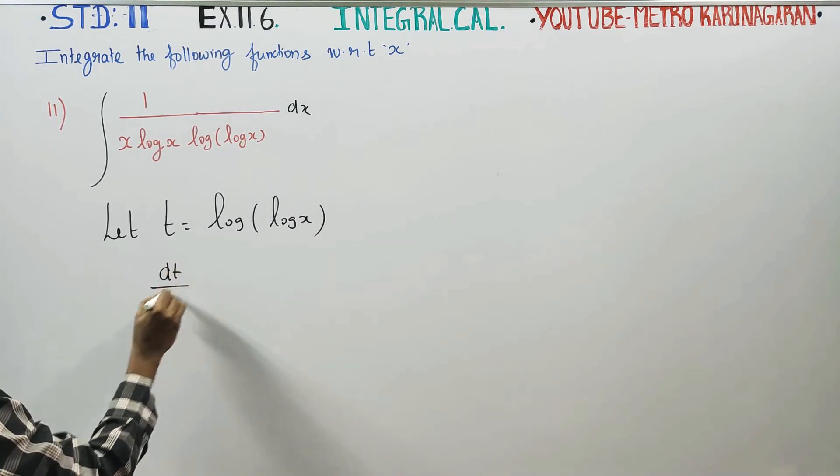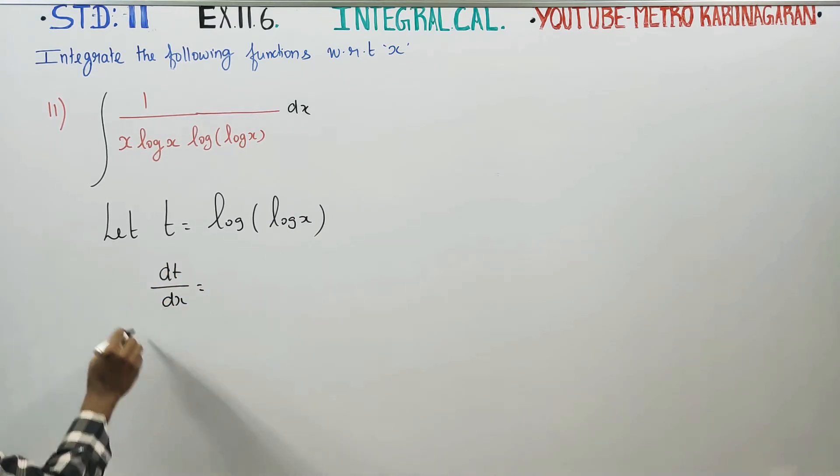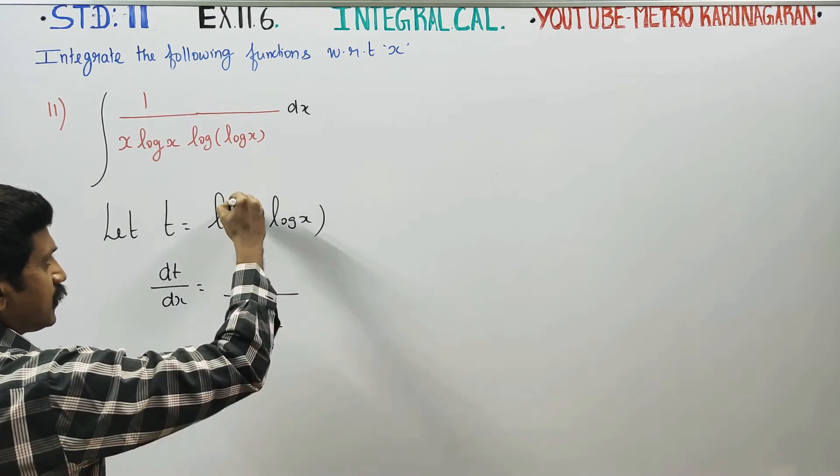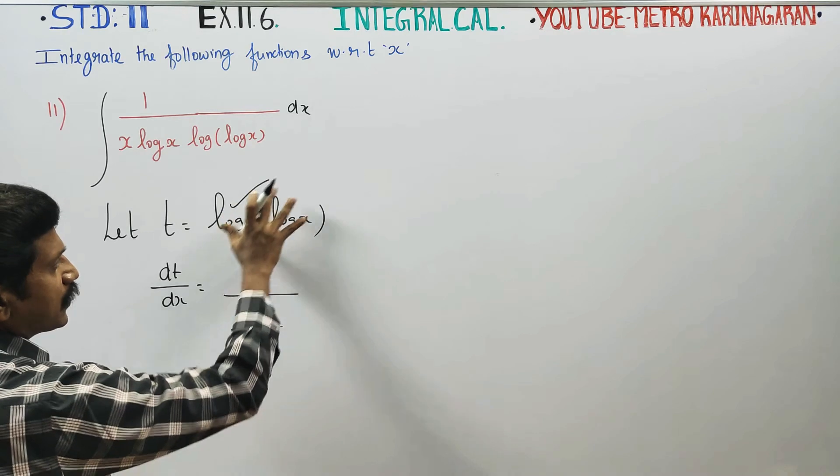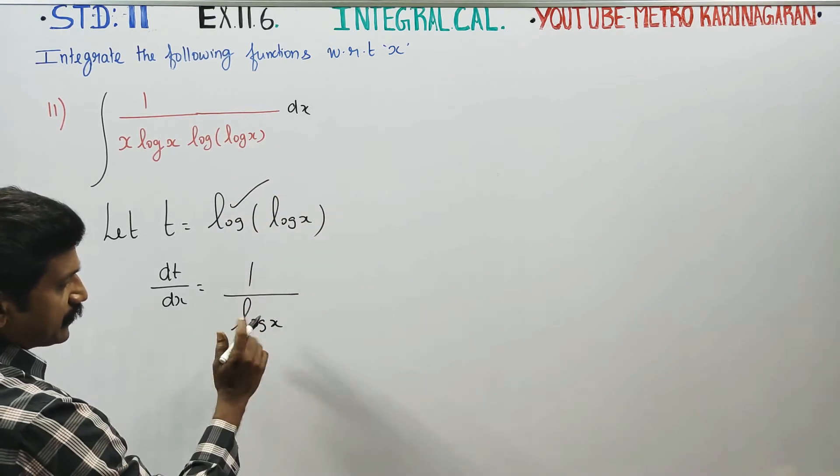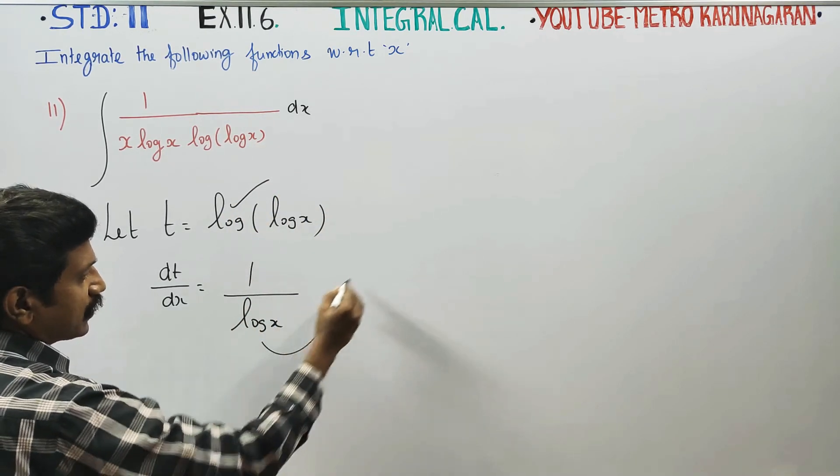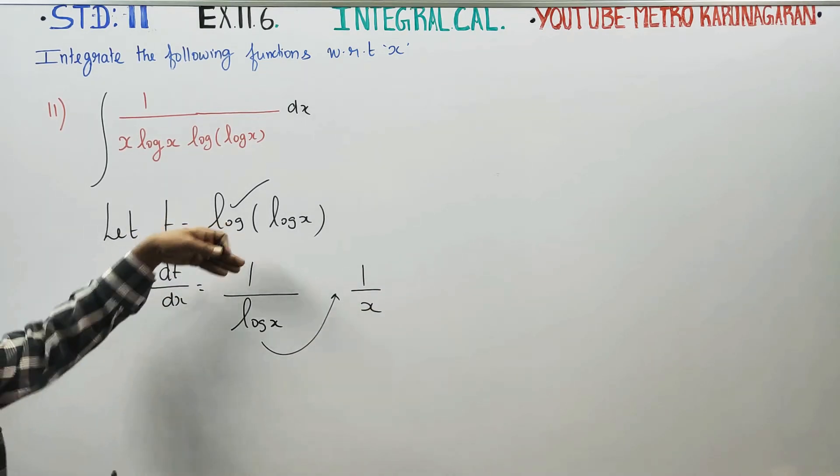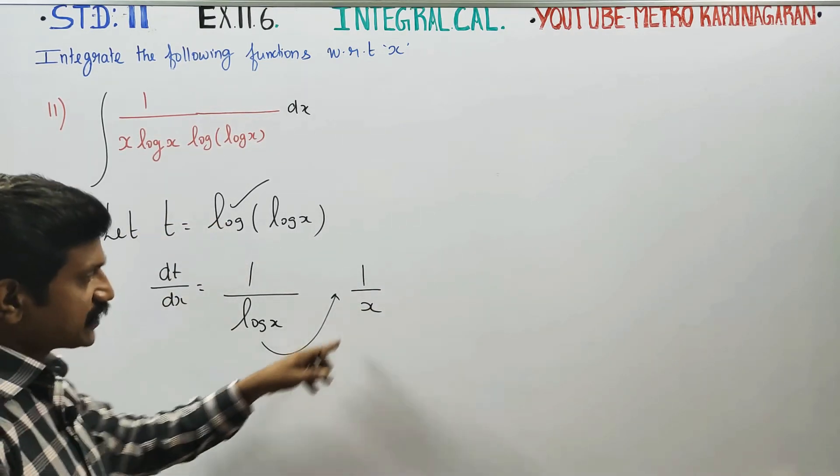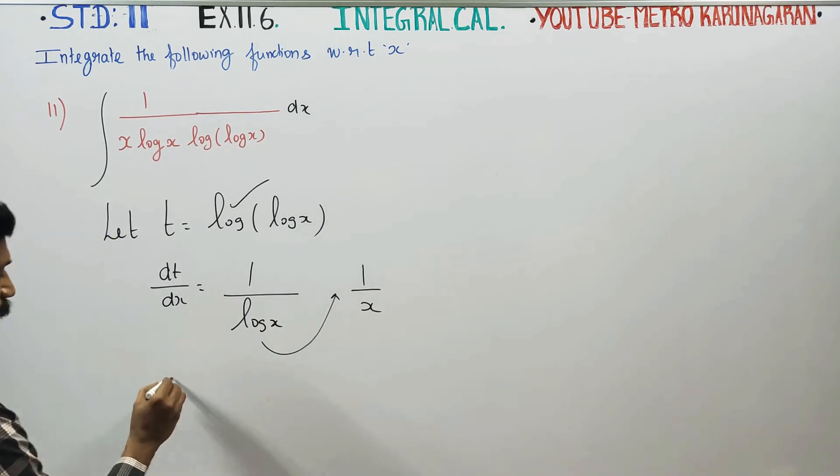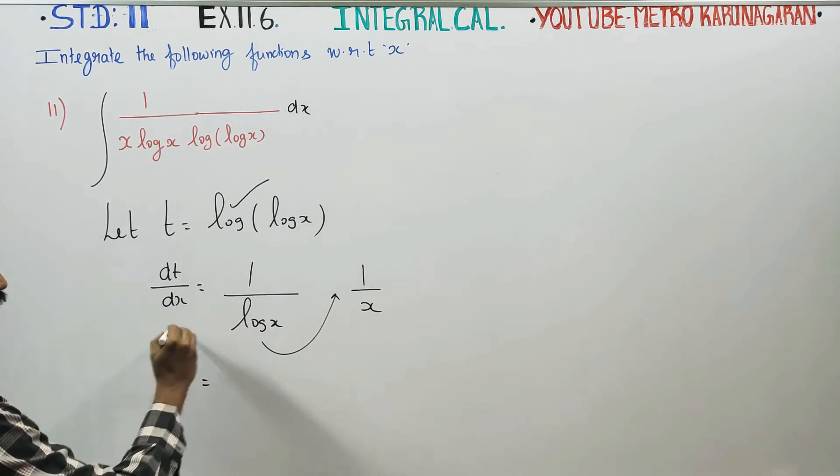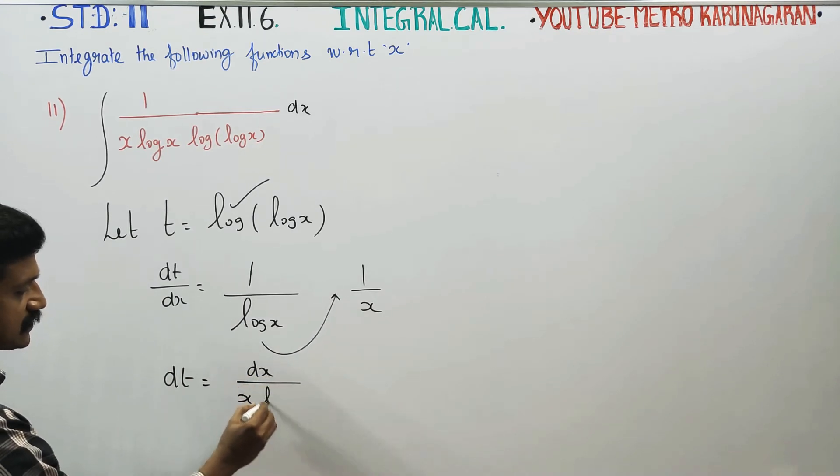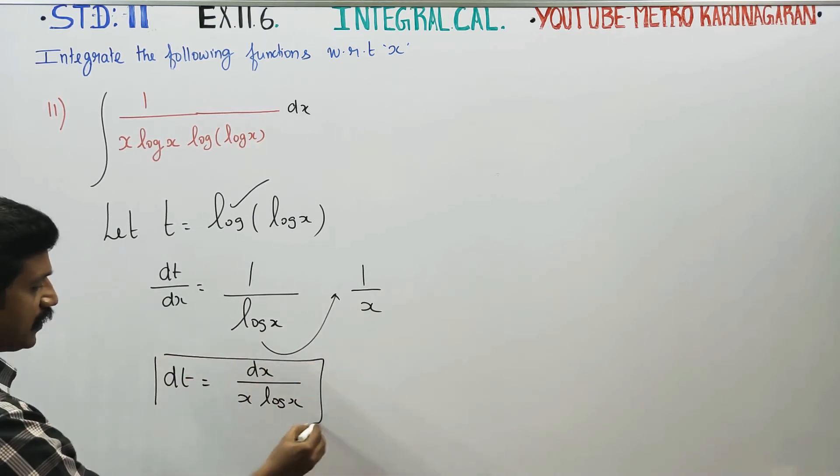Differentiate with respect to x, dt by dx. The differentiation of log log x using chain rule: the derivative of log x is 1 by x, and the derivative of log log x is 1 by log x multiplied by 1 by x. So dt is equal to dx by x log x.